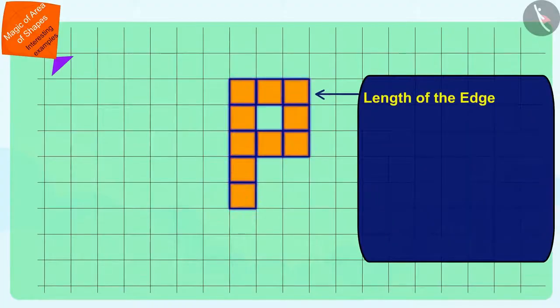The length of the edge of each square-shaped sticker is 1 cm. So, the area of each square-shaped sticker will be 1 square cm.